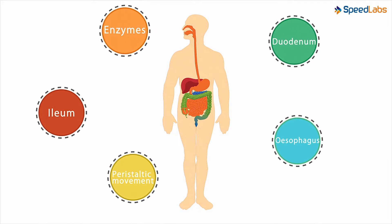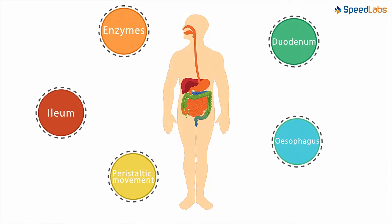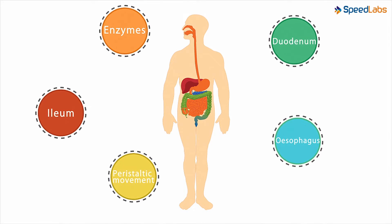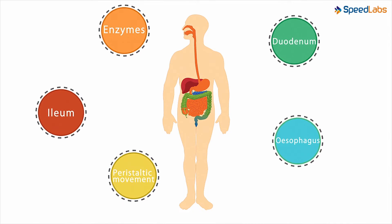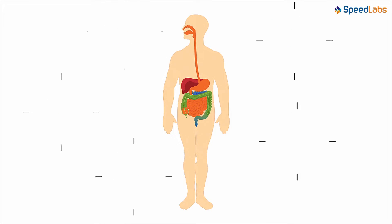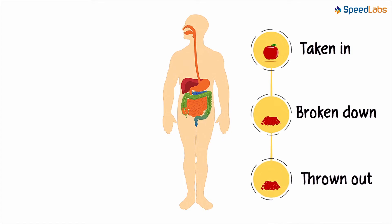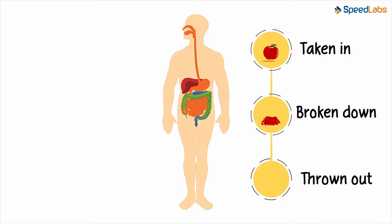The only way we can understand the digestive system, or any system for that matter, is by looking beyond these words. The first time we try to understand the system, we should not look at these words. Digestion is just one plain simple concept: food is taken in, it is broken down so that our body can absorb it, and the stuff that our body cannot absorb is thrown out. That's pretty much what we need to know to understand what digestion is.